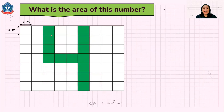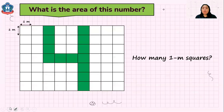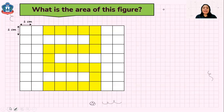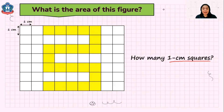I have here a number 4. Can you find the area of this number? How many 1 meter squares? To find the area, you need to count first how many 1 meter squares, and after that you can find the area of this figure. How about this figure, children? Try also to find the area by counting first how many 1 cm squares. If you are done counting, then it's your time to get the area of this figure.